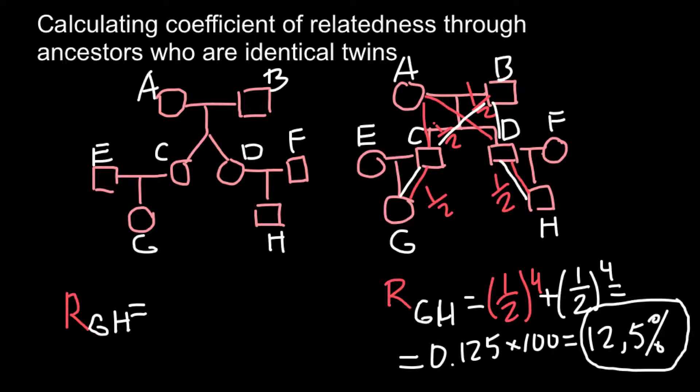What are our calculations here? Actually, it is easier to consider that individuals C and D are identical twins. We can join them in one box. And now, who is going to be common ancestor of the individual G and H?